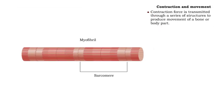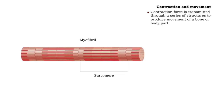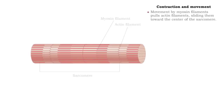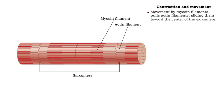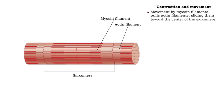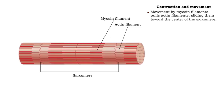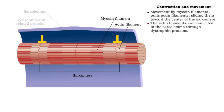Contraction force is transmitted through a series of structures to produce movement. Movement by myosin filaments pulls actin filaments, sliding them toward the center of the sarcomere. The actin filaments are connected to the sarcomere through dystrophin proteins.